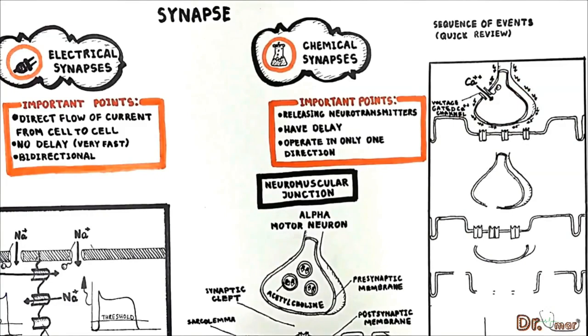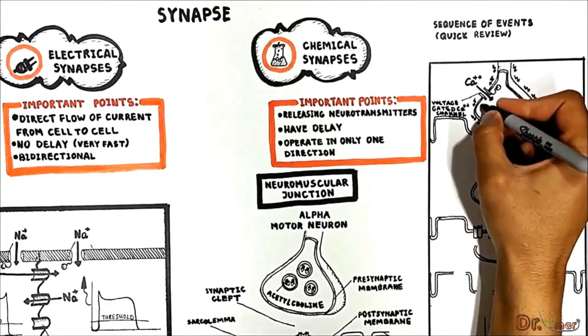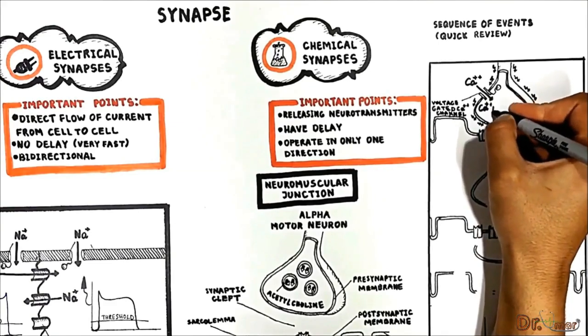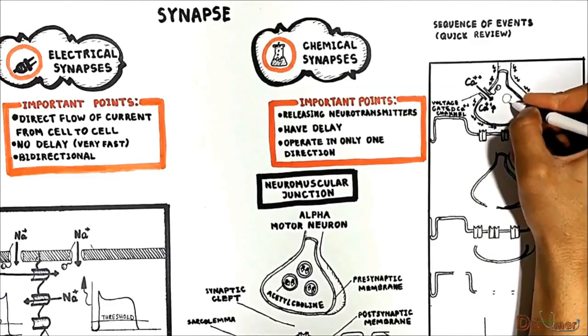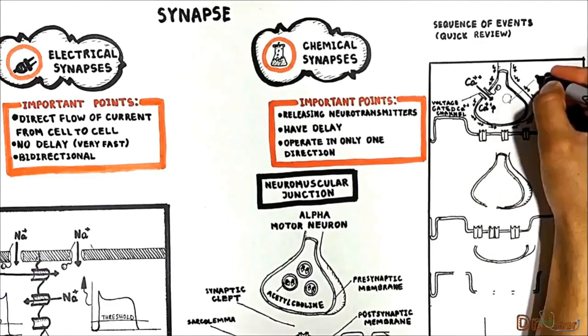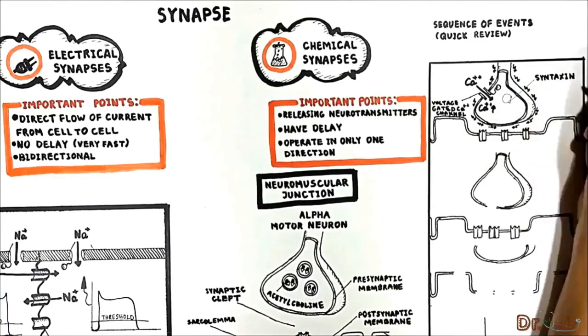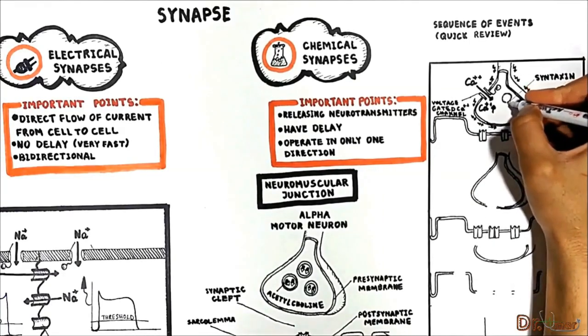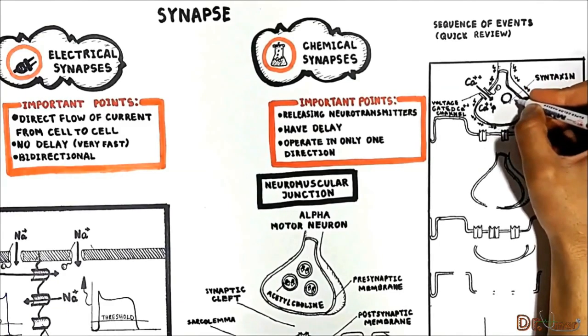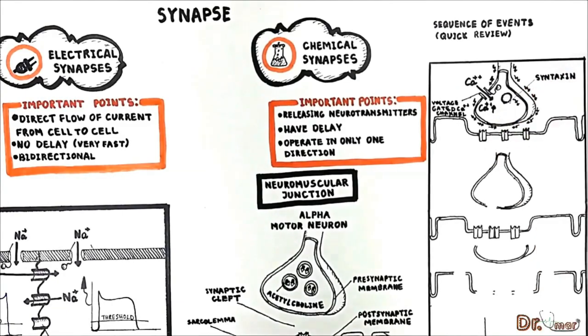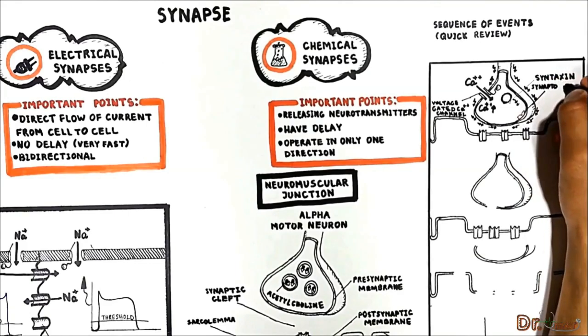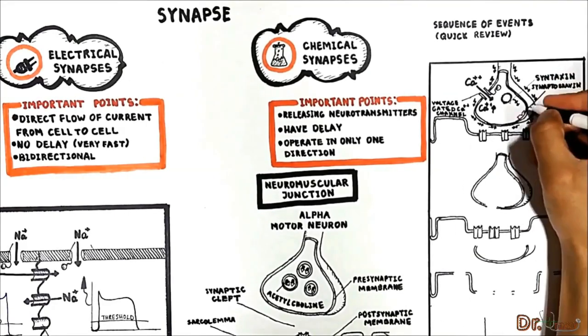The intracellular free calcium concentration increases which activates special protein syntaxin in a surface of the vesicle and mobilizes the vesicle to move toward the presynaptic membrane. In addition in a presynaptic membrane we have another protein called synaptobrevin which is also activated by calcium.